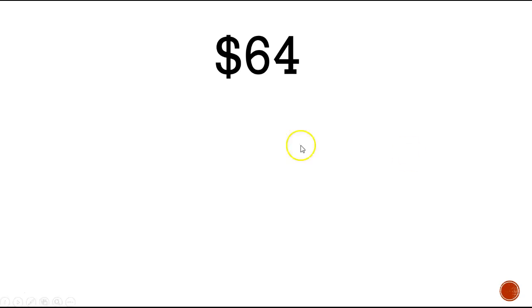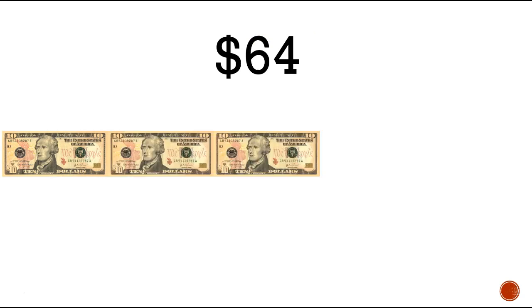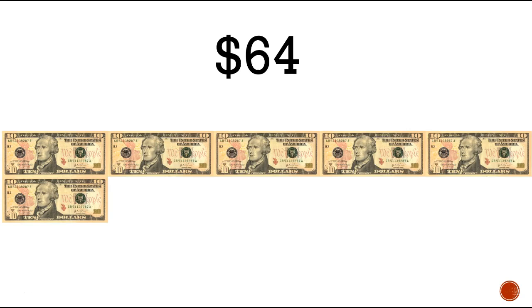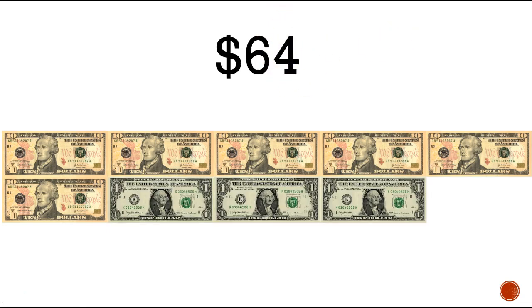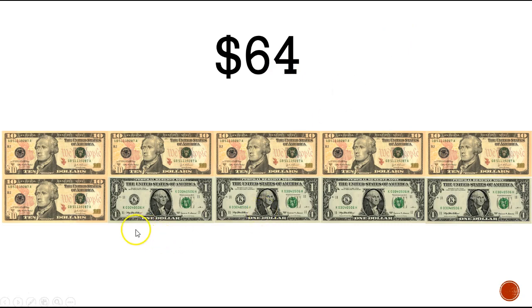I need to make sixty-four dollars using ten-dollar bills and one-dollar bills. How can I do that? First, look at the tens column — how many tens do I need? Six. So I need six ten-dollar bills: 1, 2, 3, 4, 5, 6. Then how many one-dollar bills do I need? Four: 1, 2, 3, 4. Now I have made sixty-four dollars!